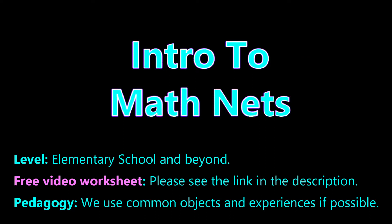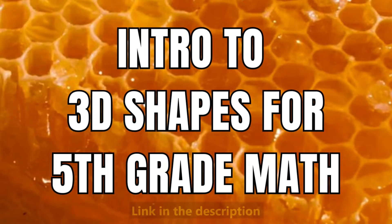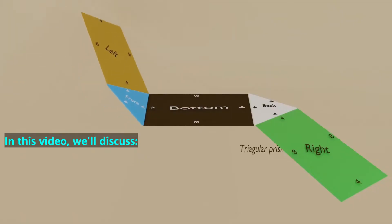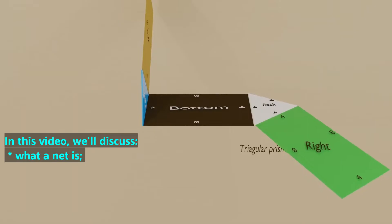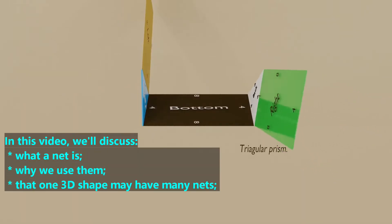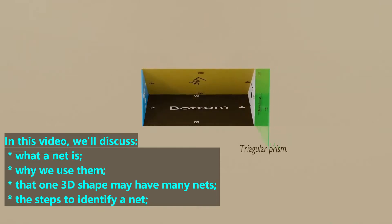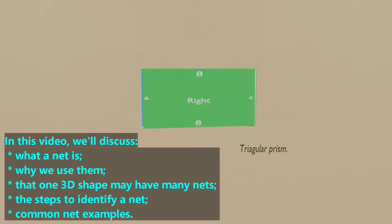Please see the link in the description to download a worksheet for this video. If you have not already done so, we suggest that you watch the video on 3D shapes before watching this video. It is very common on 5th grade state math exams to be asked what 3D shape a net makes. In this video, we will discuss what a net is, why we use them, that one 3D shape may have many nets, the steps to identify a net, and common net examples.